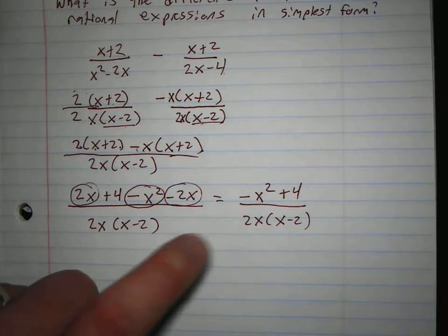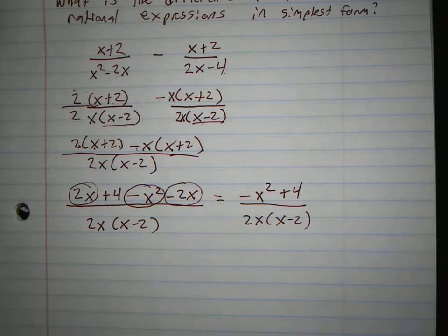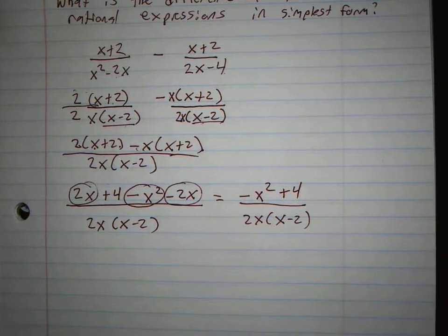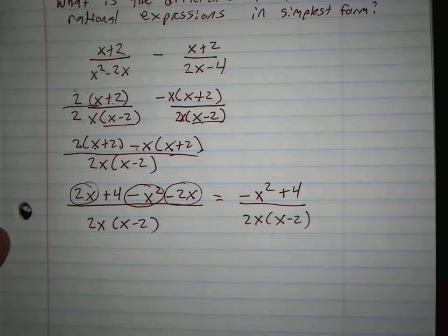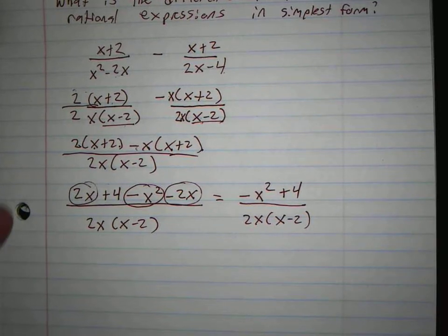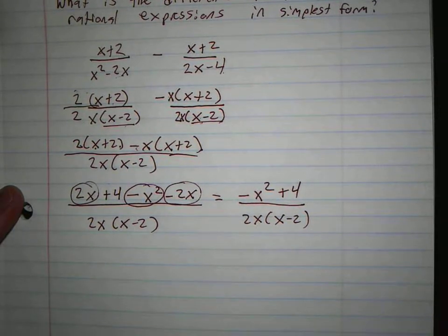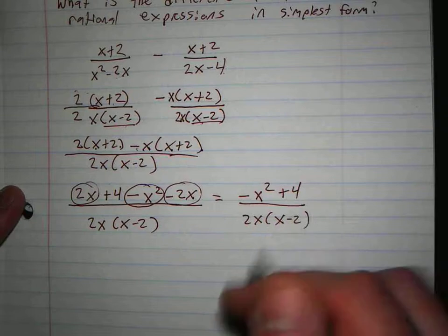When x squared is negative, what do you factor out? Let's make it positive. I'm trying to, you've actually factored out a negative 1.